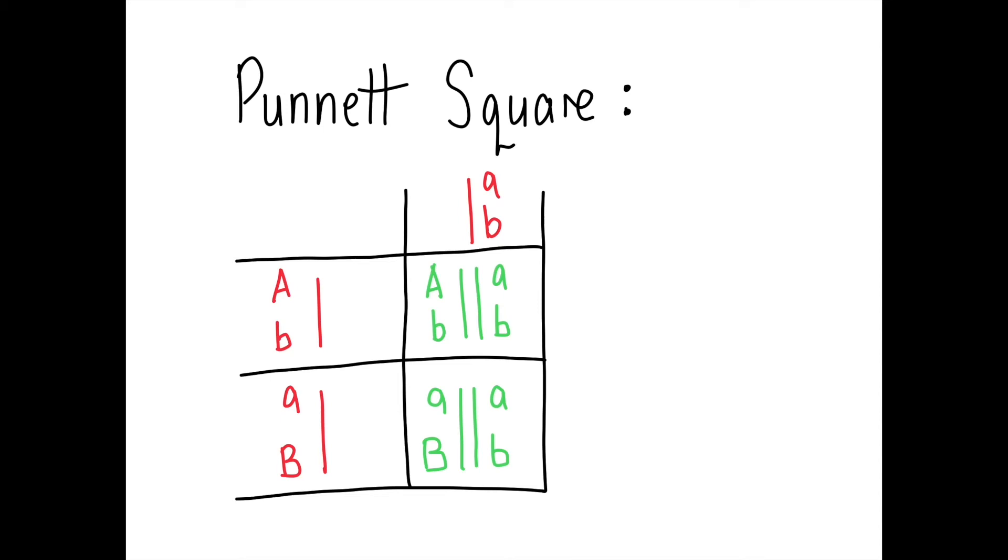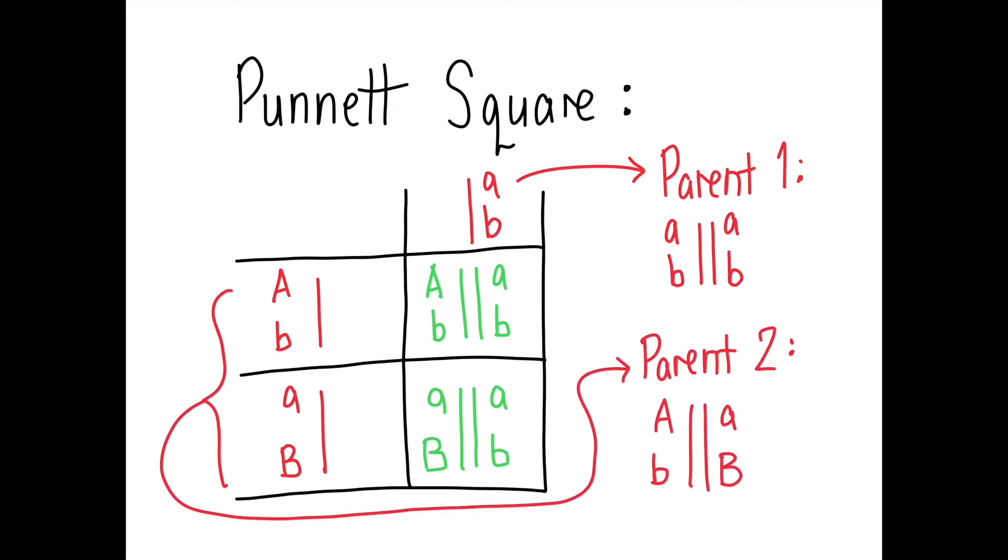Then on the left hand side, you can see the gamete from the other parent. So if we continue to work backwards from this, you can produce the following parents. Parent one, it did tell you this was a test cross. So they are homozygous recessive for both of them. Therefore, that is parent one. And parent two would have been produced by the two, or would have produced the two gametes that you saw on the left. We put them together there. But this is not the end of the story.